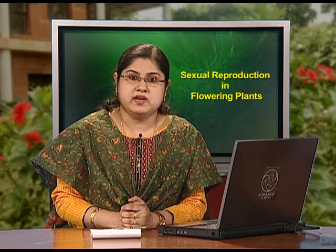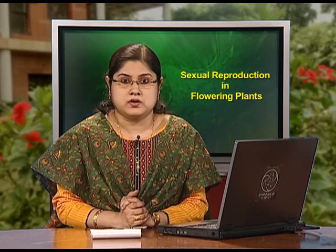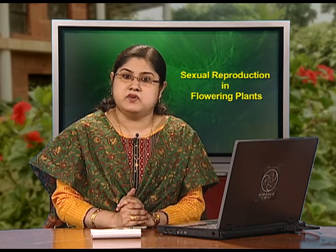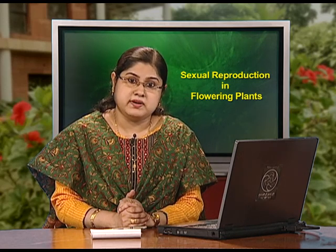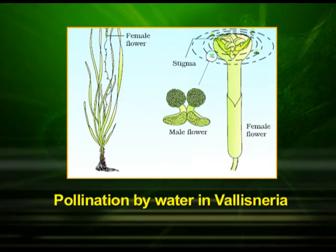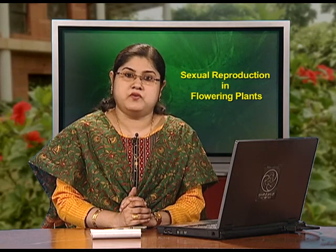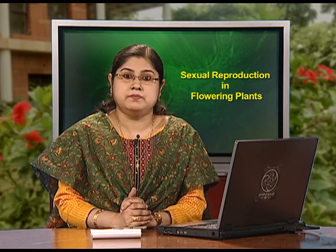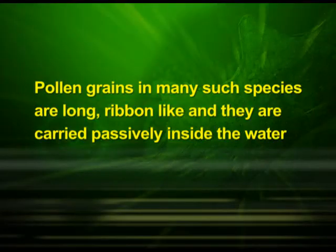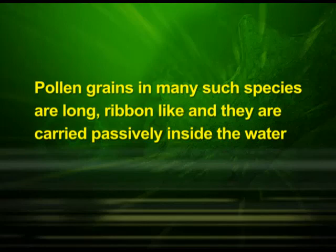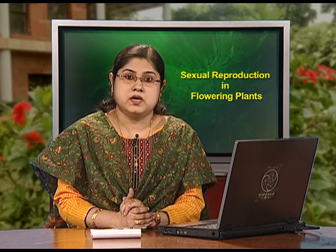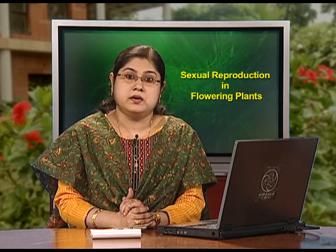In Vallisneria, the female flower reaches the surface of water by a long stalk, and the male flowers or pollen grains are released onto the surface of water. They are carried passively by water currents, and some of them eventually reach the female flower and the stigma. We can observe pollination by water in Vallisneria in this diagram. In another group of water-pollinated plants such as sea grasses, female flowers remain submerged in water and the pollen grains are released inside the water. Pollen grains in many such species are long and ribbon-like and are carried passively inside the water until some reach the stigma. In most water-pollinated species, pollen grains are protected from wetting by a mucilaginous covering.